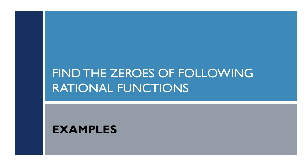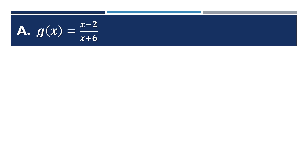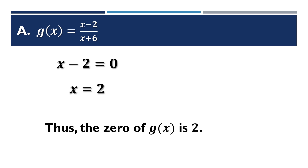For the zeros of a rational function, equate the numerator to 0. Example 1: g(x) = (x minus 2) over (x + 6). Equate the numerator: x minus 2 = 0, so x = 2. Therefore the zero of g(x) is 2.